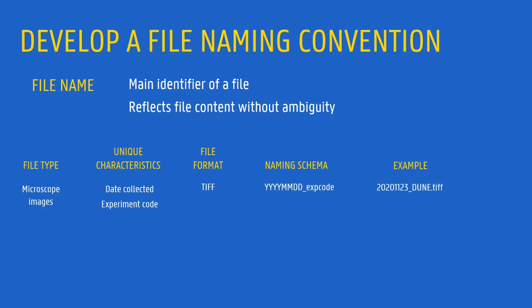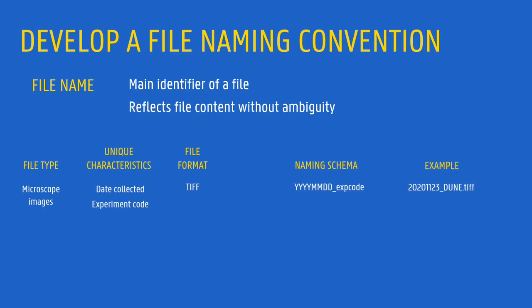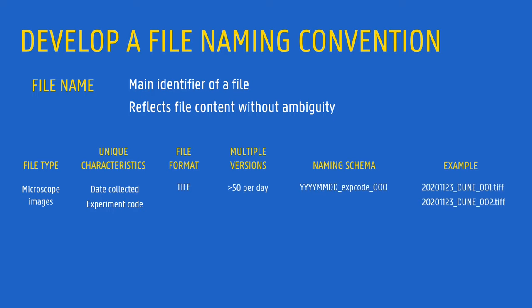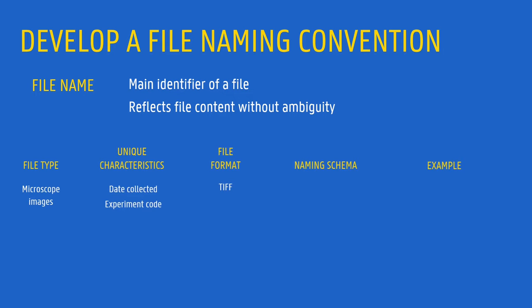Finally, think about whether you will produce multiple files or versions with similar characteristics. In that case, you might need to add a sequential number to the file name. Alternatively, you could think whether there is an additional attribute — for example, a code for the type of sample — that could make your file names unique.